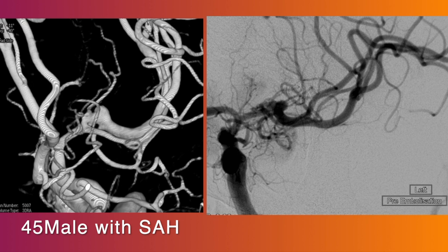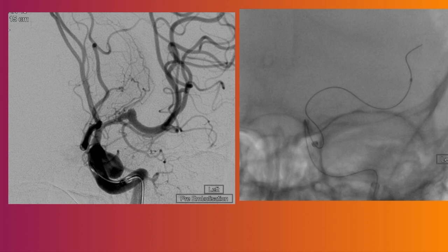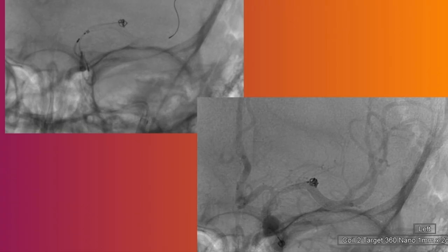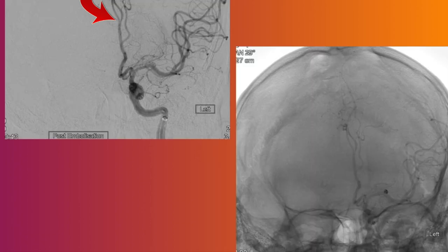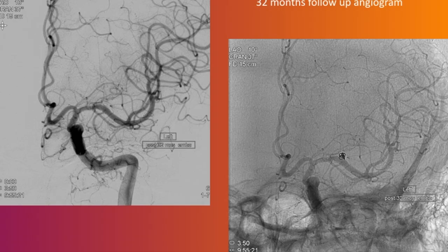Here is another patient, a 45-year-old grade one subarachnoid hemorrhage with a blister aneurysm in the MCA. The plan was to drop a flow diverter and put some coils using a jailed microcatheter. You can see the stent placed, the jailed microcatheter, coils deployed to close the aneurysm — a reasonably good result that stays many years down the line, and the patient is cured.